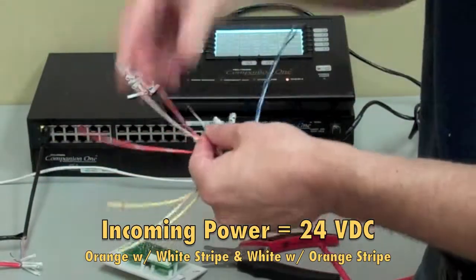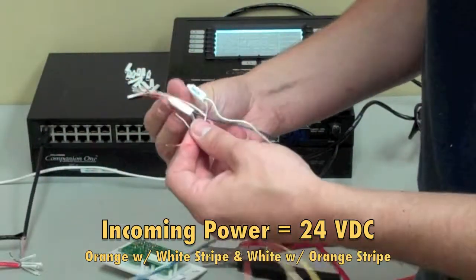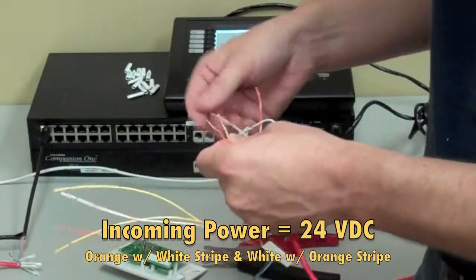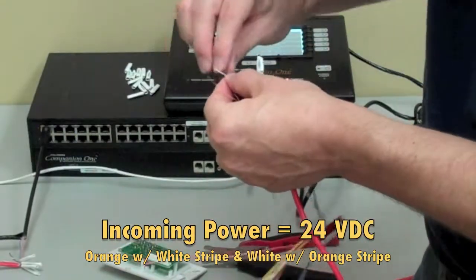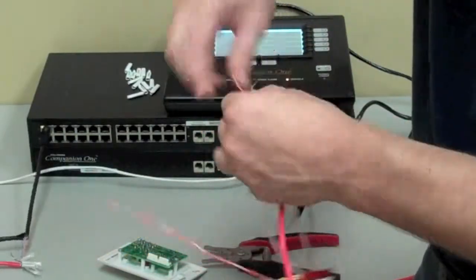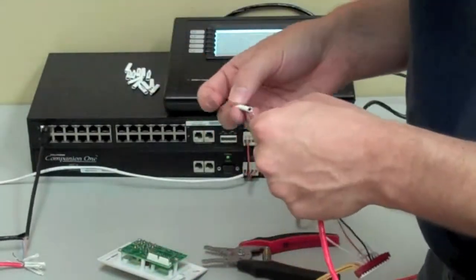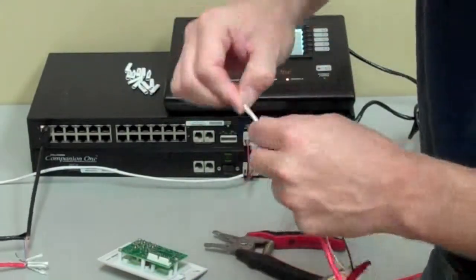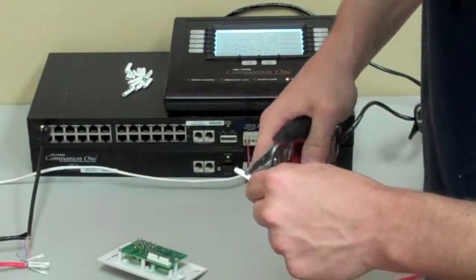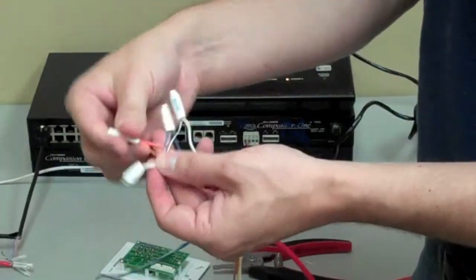Now we're going to do our incoming power pair. On the pigtail adapter, you have a white with an orange stripe. That's your positive lead, and you have an orange with a white stripe. That's a negative lead. Now, again, remember your house wiring could be who knows what color, so have that voltmeter handy to determine what's negative and what's positive, and then just connect them the same way you just did your incoming data pair. When you're done, you have two nice, tight connections.